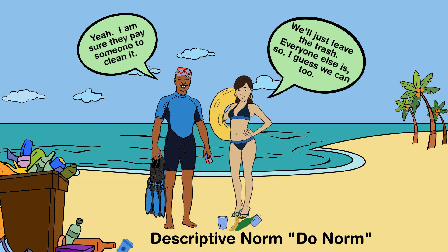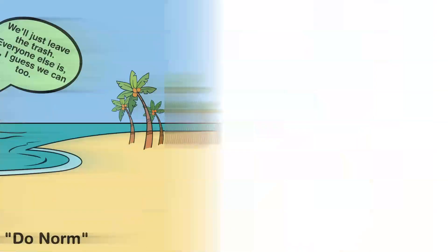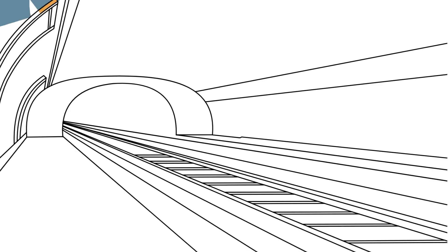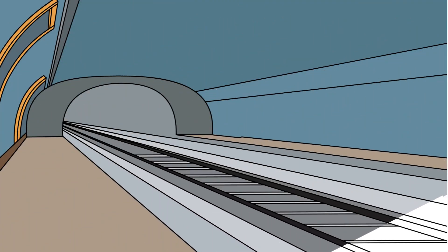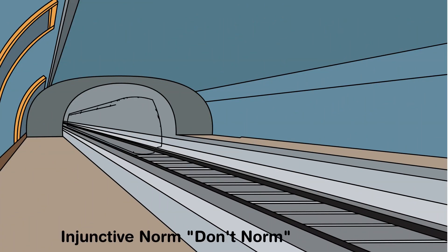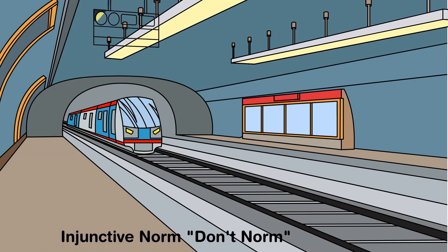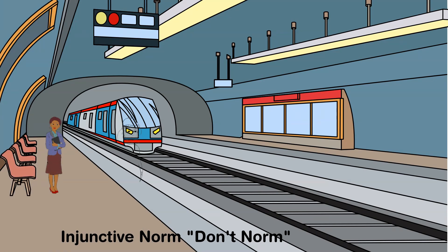On the other hand, an injunctive norm transmits group approval about a particular behavior. It dictates how an individual should behave. In more simple terms, it is what we approve or disapprove of — sometimes referred to as the 'don't norm.'